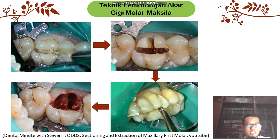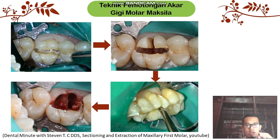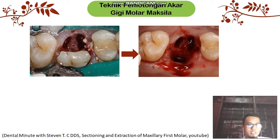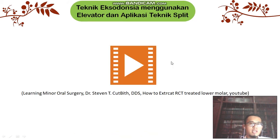Pertama kita lakukan pengeluaran pada sisi bukal: keluarkan akar mesial bukal, kemudian akar distal bukal satu per satu, barulah kita melakukan pengeluaran pada akar palatalnya. Pada kasus yang mahkotanya masih cukup banyak, akan ada halangan pada sisi mesial-distal; kita bisa melakukan pengurangan dengan bur secara oblique sehingga akan terbebas dari kontak proksimal dengan gigi tetangga, dan pengambilan akar palatal akan menjadi lebih leluasa. Selanjutnya kita akan menyimak bagaimana teknik eksodonsia dengan menggunakan elevator dan aplikasi teknik split.